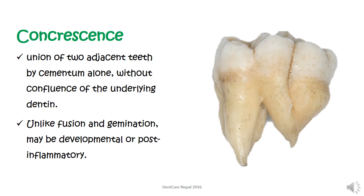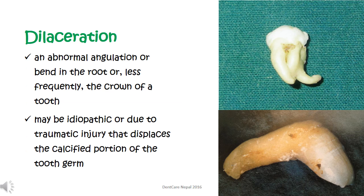Concrescence is the union of two adjacent teeth only at the level of cementum, not going deeper, without the confluence of the underlying dentine. Unlike fusion and gemination, concrescence may be developmental or post-inflammatory.